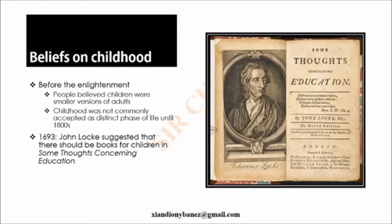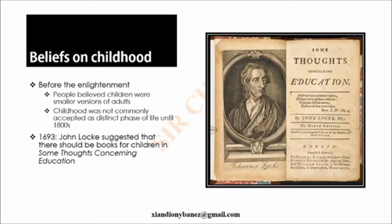How was childhood depicted in literature before the Enlightenment, and how were perceptions of childhood different from those of today? The Enlightenment is also called the Age of Reason, which roughly took place during the late 1600s to the early 1800s. During this time, people believed that children are actually smaller versions of adults. Childhood was not accepted as a distinct phase of life until the 1800s. So in the late 1600s, the philosopher John Locke suggested that there should be books expressly written for children, in his work entitled Some Thoughts Concerning Education.